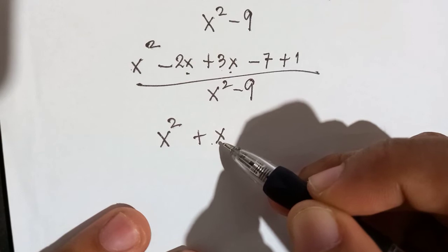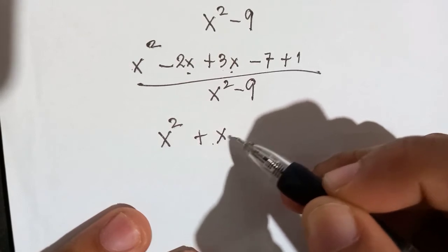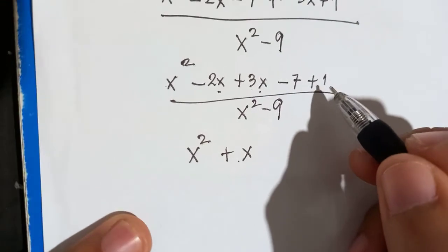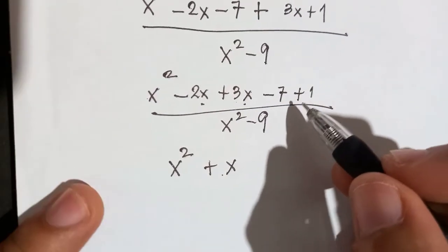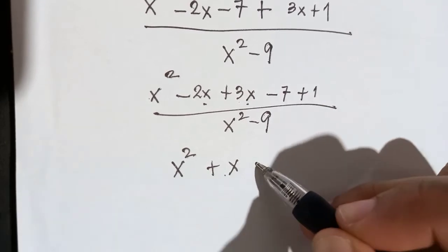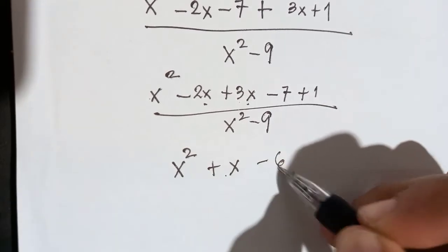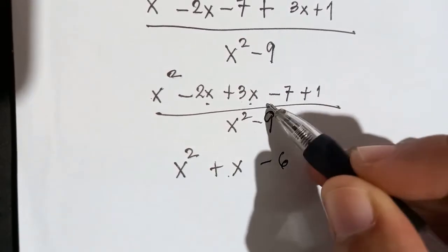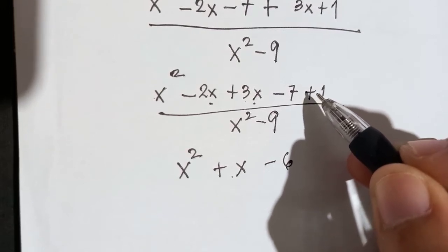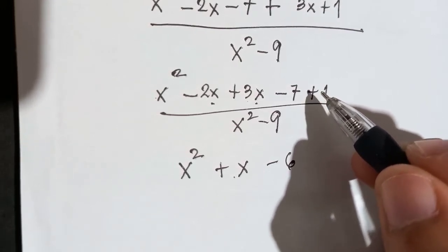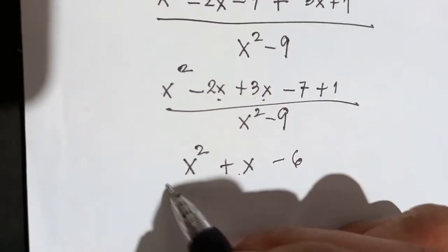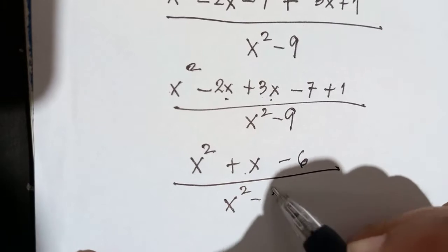We will not write 1 because it is already understood that it is 1. Then negative 7 plus 1: different sign, negative and positive, so subtract and copy the sign of the biggest absolute value. 7 is bigger than 1, so copy the sign of 7, which is negative. Result: x squared plus x minus 6 over x squared minus 9.